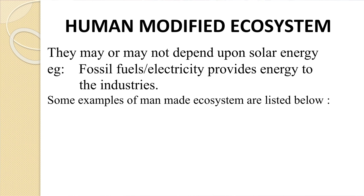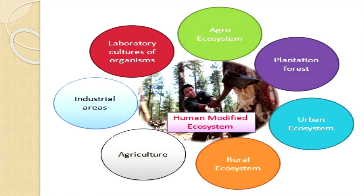The foremost characteristic of human modified ecosystems is that they are not dependent upon solar energy. Instead, fossil fuel and electricity provide energy to industries. The various modified ecosystems include: agro ecosystem, plantation forest, urban ecosystem, rural ecosystem, agriculture and industrial areas, and lastly laboratory culture of organisms.